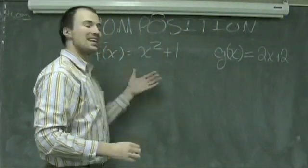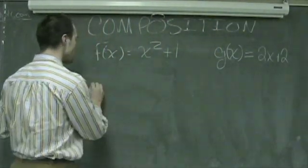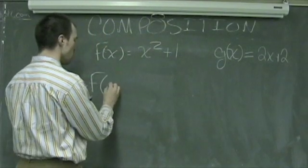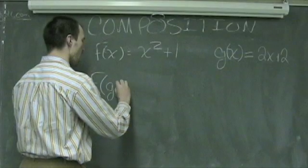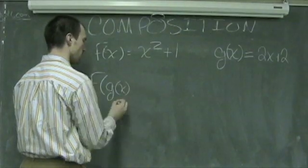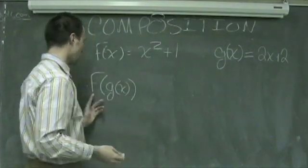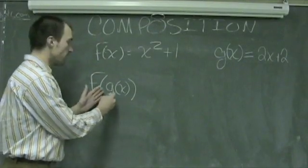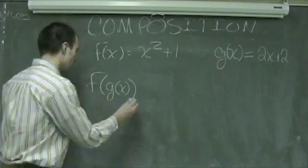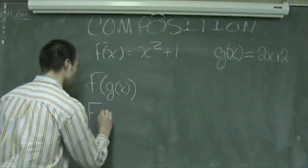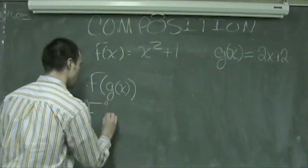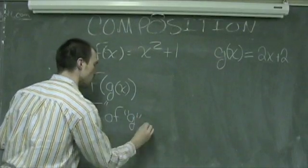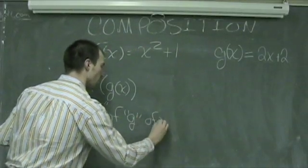A composition of functions has the notation f, open parenthesis, the function of g of x. This would be read as f of g of x.